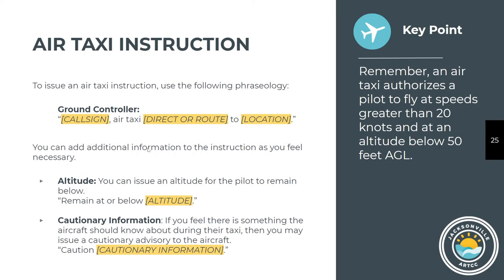For a hover taxi, use the same format as a fixed wing: 'Helicopter 101, hover taxi to runway 14 via Gulf Alpha Lima.' For an air taxi you can give routing but most of the time just say direct: 'Helicopter 101, air taxi direct to runway 14' or 'direct to the helicopter maintenance area.' You can specify remaining at or below an altitude — 50 feet is implied so you typically don't need to state it. Remember to give the same cautionary advisories as any other aircraft: 'Caution, Boeing 737 taxiing on taxiway Alpha' or, at certain airfields, 'caution, crane up to 200 feet west of the tower.' That information is available in the airfield directory and NOTAMs.